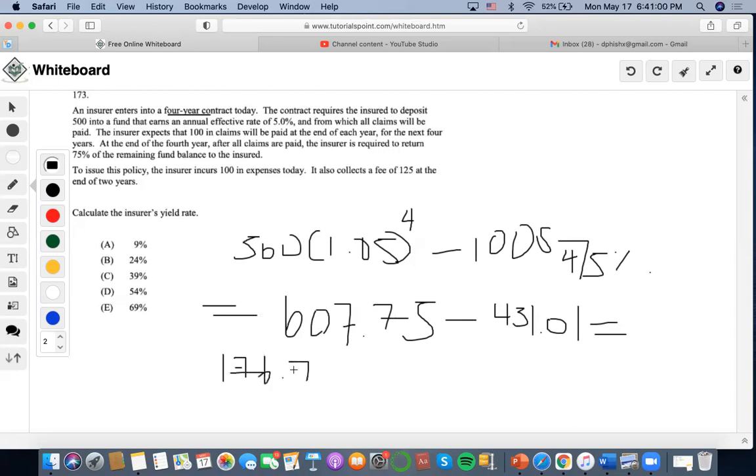So now, this is after all claims have been paid. The insurer is required to return 75% of the remaining fund to the insurer, which means that he's only able to keep 25% of this amount. So we multiply it by 25%, we get 44.18.